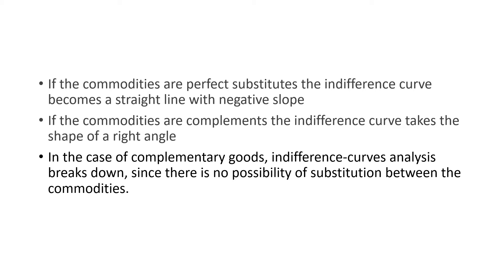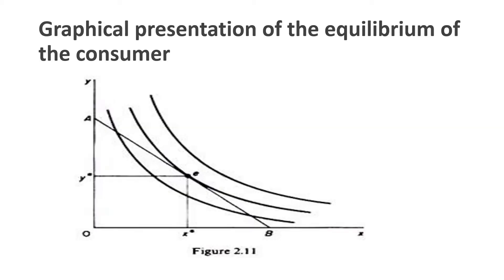If the commodities are perfect substitutes, the indifference curve becomes a straight line with a negative slope. If the commodities are complements, the indifference curve takes the shape of a right angle, and there is no possibility of substitution. Now let's understand how we can combine the indifference curve and budget line to arrive at the ordinal utility analysis.